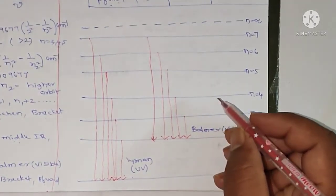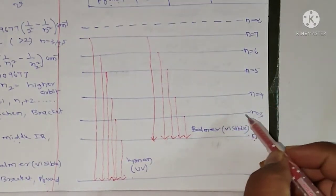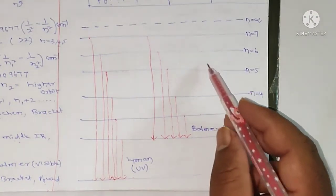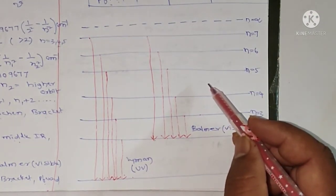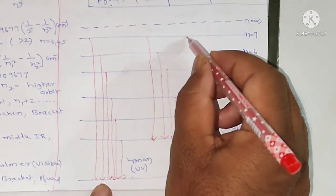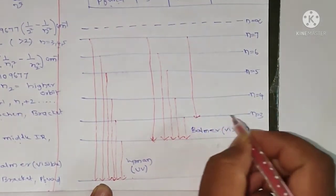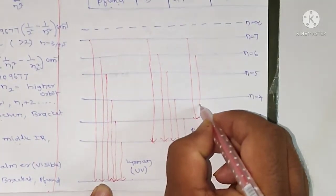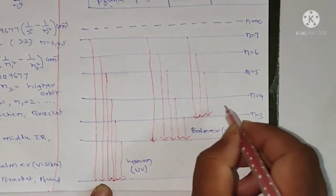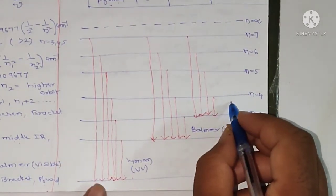When excited electrons come back to the lower third energy level from any of the higher energy levels, Paschen series forms. The electron may come from 7th to 3rd, 6th to 3rd, 5th to 3rd, or 4th to 3rd. Then Paschen series forms.